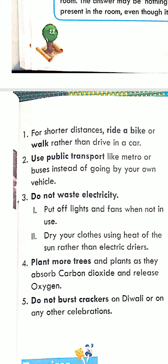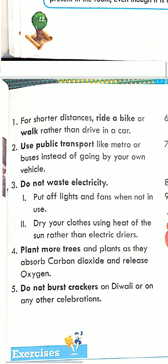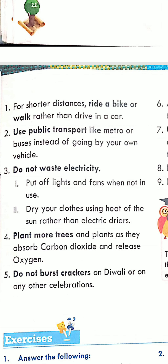Next: do not waste electricity. You can also participate by avoiding the misuse of electricity. For example, put off lights and fans when not in use. If you have 4 rooms and everyone is together in one place, the other 3 rooms' lights and fans should be turned off. Also, dry your clothes using the heat of the sun rather than electric dryers. If you put clothes in sunlight, electricity will be saved and your purpose will also be solved.